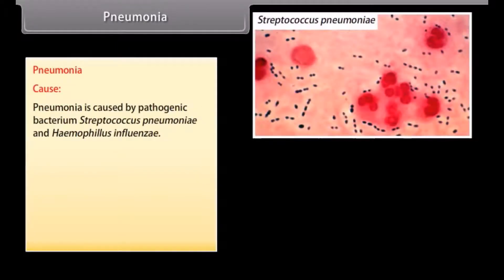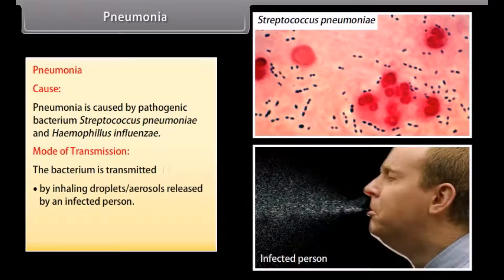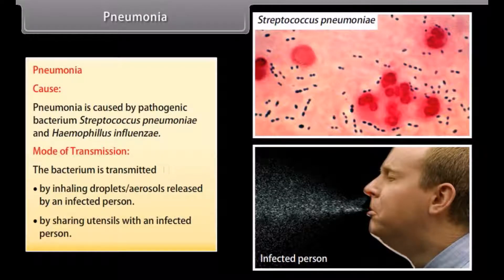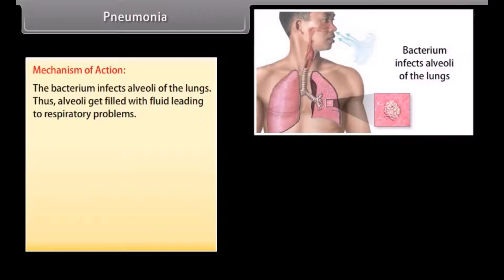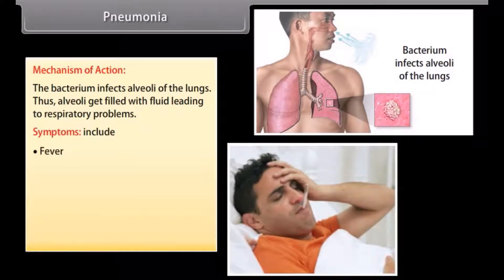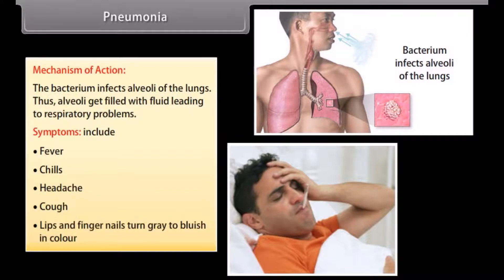Pneumonia is caused by pathogenic bacteria Streptococcus pneumoniae and Haemophilus influenzae. The bacteria are transmitted by inhaling droplets or aerosols released by an infected person, or by sharing utensils with an infected person. The bacteria infect the alveoli of the lungs, which get filled with fluid, leading to respiratory problems. Symptoms include fever, chills, headache, cough, and lips and fingernails turning grey to bluish in colour.